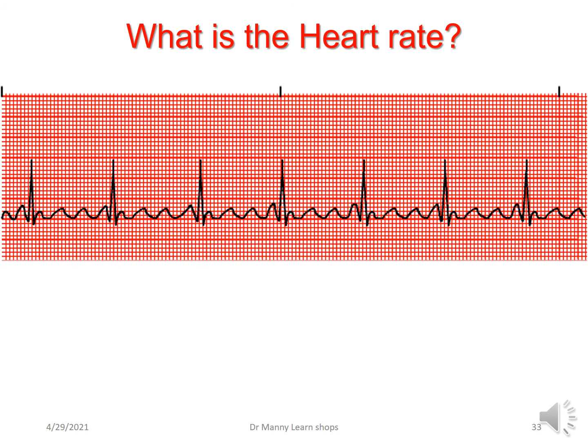Look at this one here — what's the heart rate in a six-second rhythm strip? Counting 1, 2, 3, 4, 5, 6, 7 — 70 beats per minute. Very accurate. Very simple. Not hard to do.